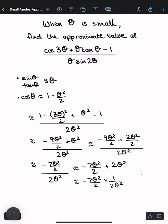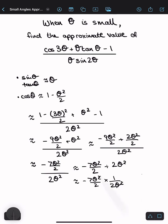And now we can see that the θ² can get cancelled out, which leaves us with minus 7 over 4. And this is your answer.